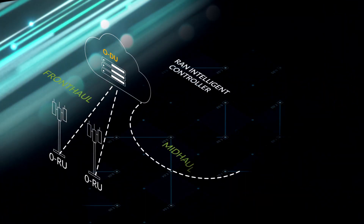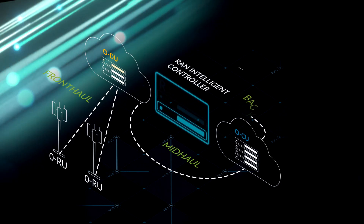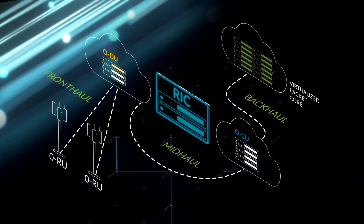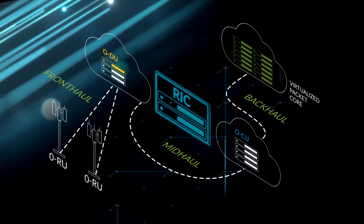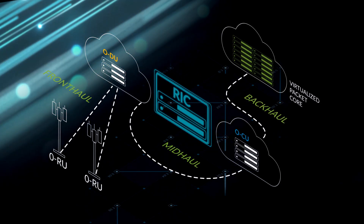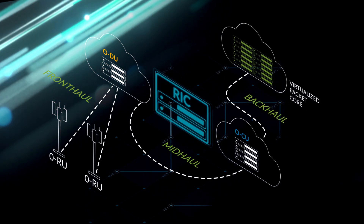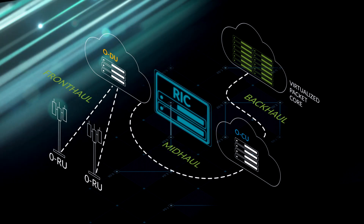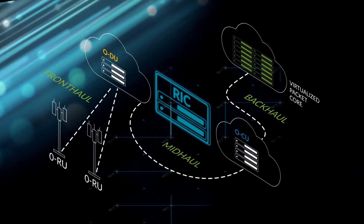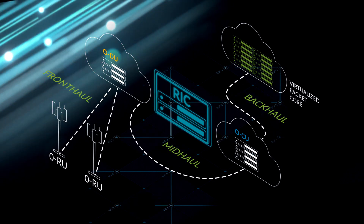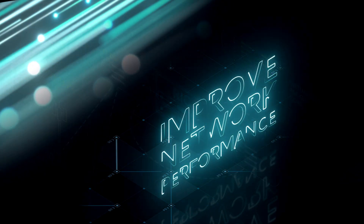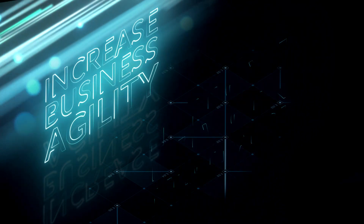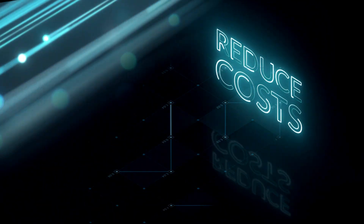And a new component, the RAN Intelligent Controller, or RIC, adds even more capabilities to the network. The RIC is essentially the operating system for the RAN, allowing you to onboard applications to improve network performance, increase business agility and reduce costs.